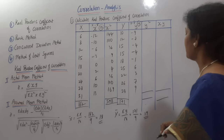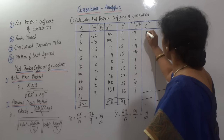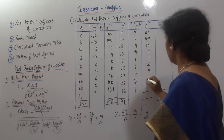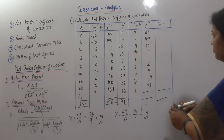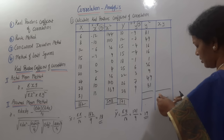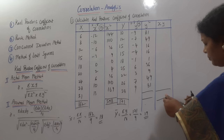Now y-squared: 9 squared is 81, 7 squared is 49, 4 squared is 16, 4 squared is 16, 1 squared is 1, 6 squared is 36, 3 squared is 9, 7 squared is 49, 9 squared is 81. The total of sigma y-squared comes to 338.